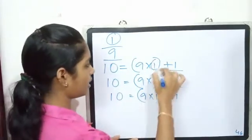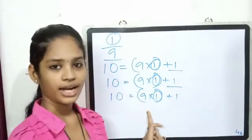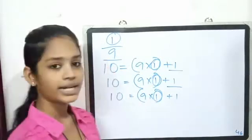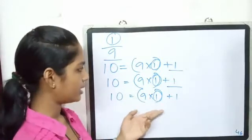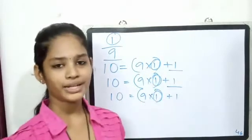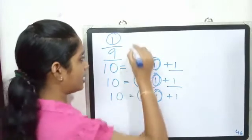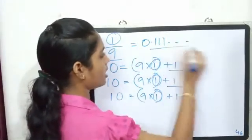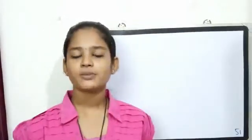Here we have one, one, one. We have nine. The denominator is nine. Then we have nine, and again nine. Here we have one. So the answer is 0.111 etc.